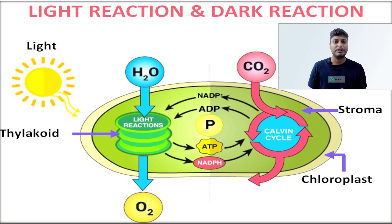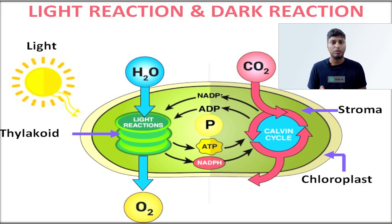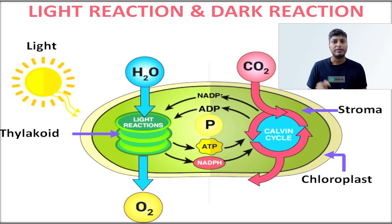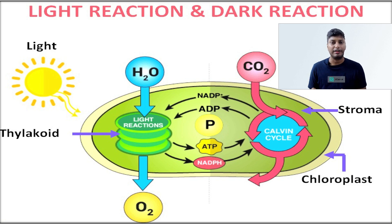The photosynthetic pigments present inside the granum help in the absorption of sunlight and in the formation of energy in the form of ATP. By making use of this energy, green plants make their own food — glucose. The formation of glucose is part of the dark reaction, and so the dark reaction is dependent on the light reaction.